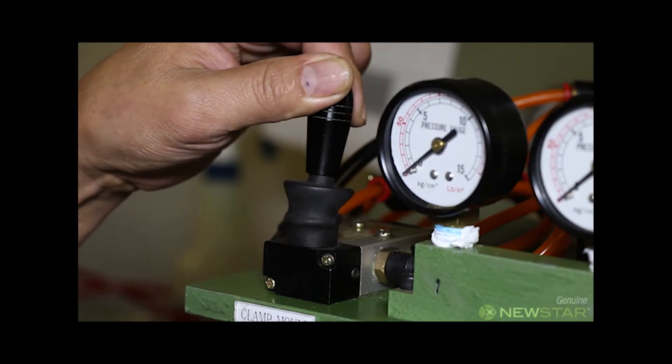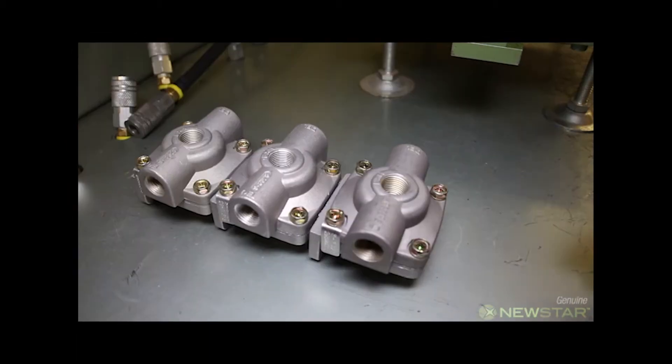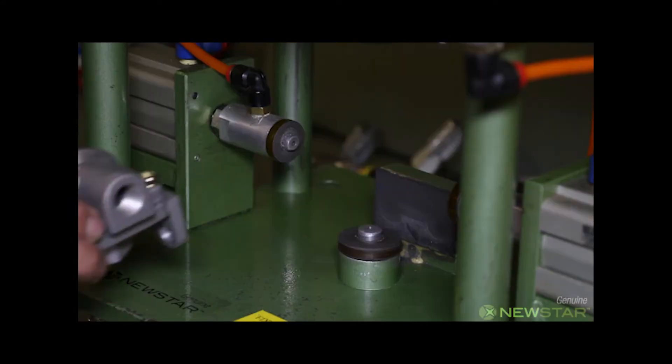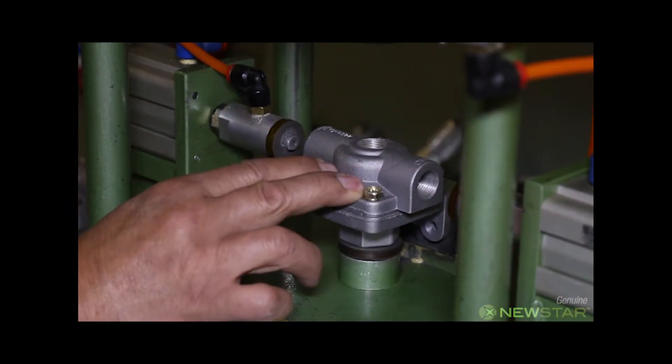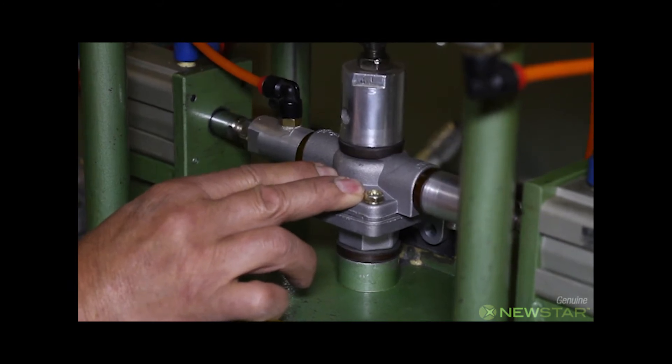After the valve is clamped down, if you check the gauges at the top of the fixture, the operator will input 130 psi supply pressure into the valve.